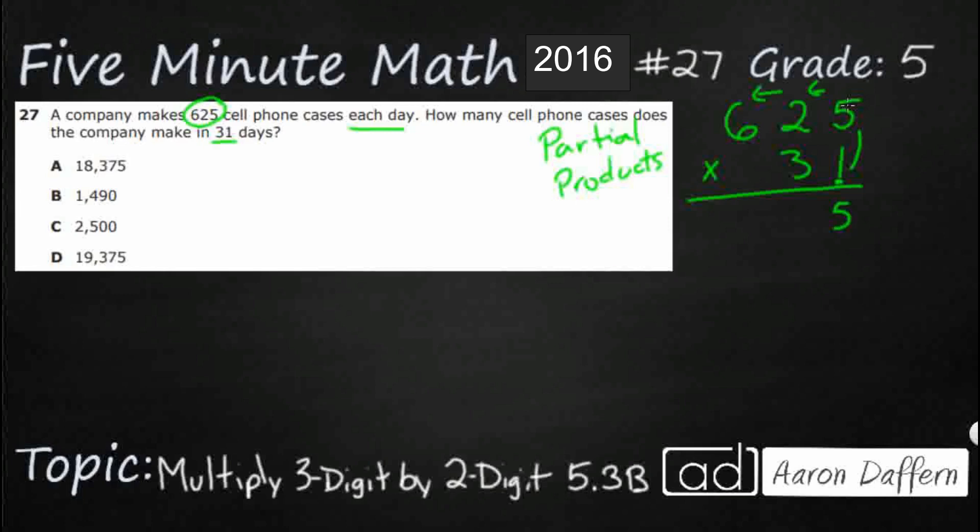Now we're going to start a new row. We're going to take this 1, we're going to multiply it by this 2, but realize this 2 is really in the tens place. So a 2 in the tens place is worth 20. So 1 times 20, well that's easy, that's 20. So you see how we are lining them up there.